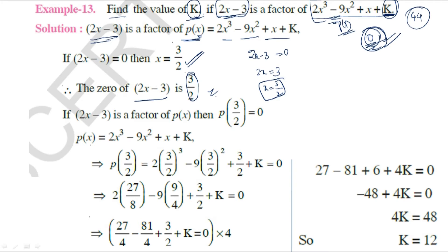Since (2x - 3) is a factor of P(x), the remainder is 0. Therefore, P(3/2) = 0. P(x) = 2x³ - 9x² + x + K.